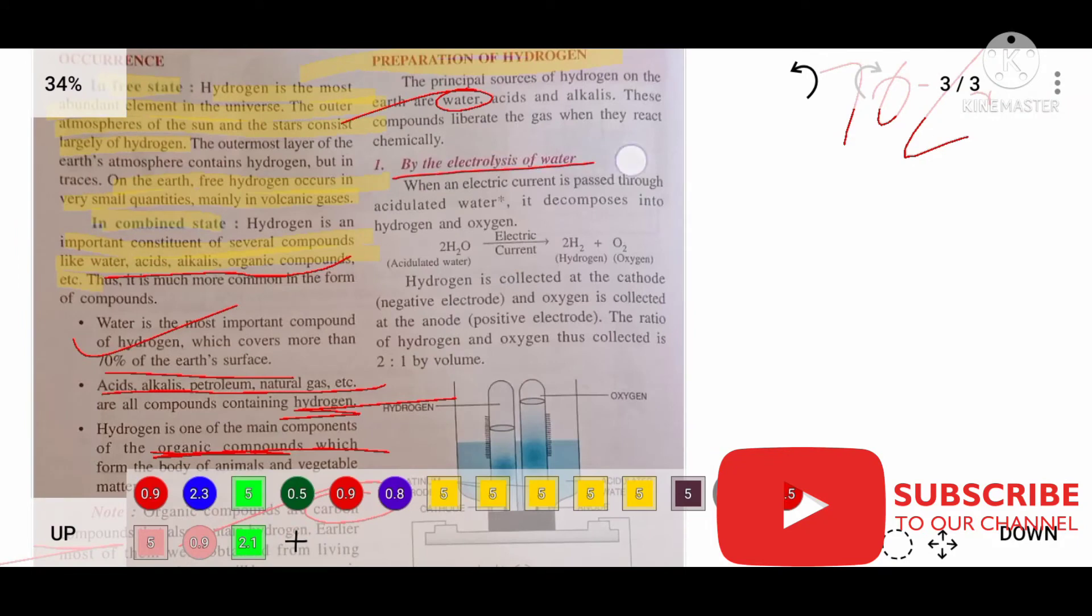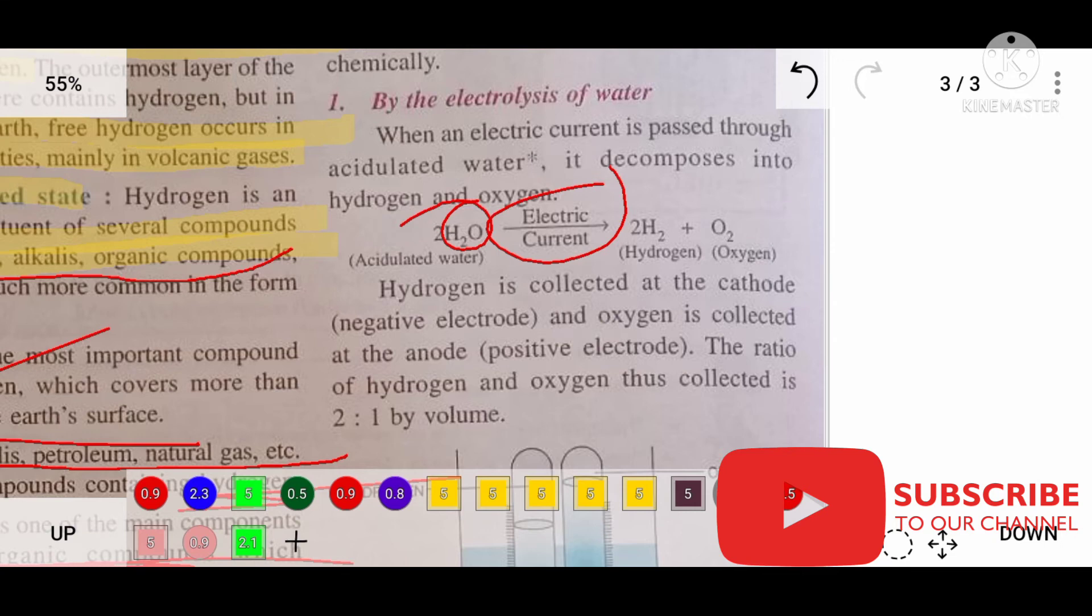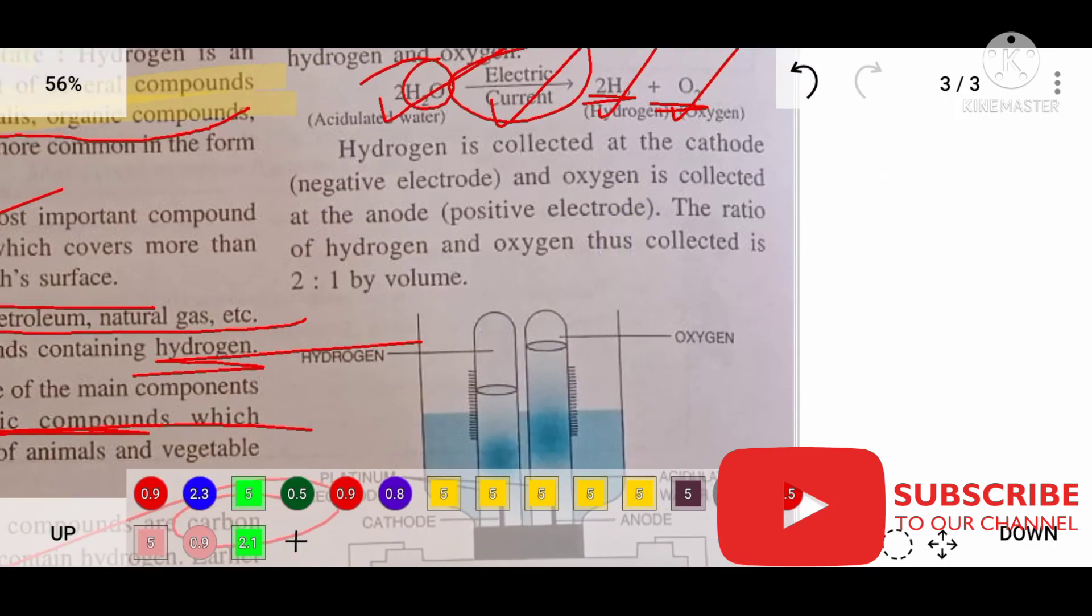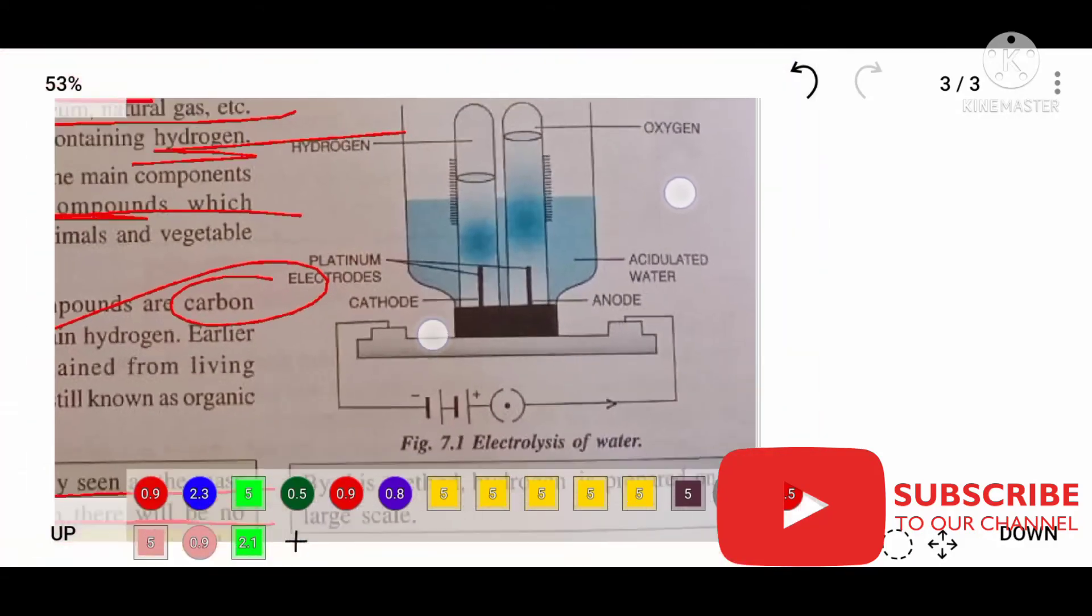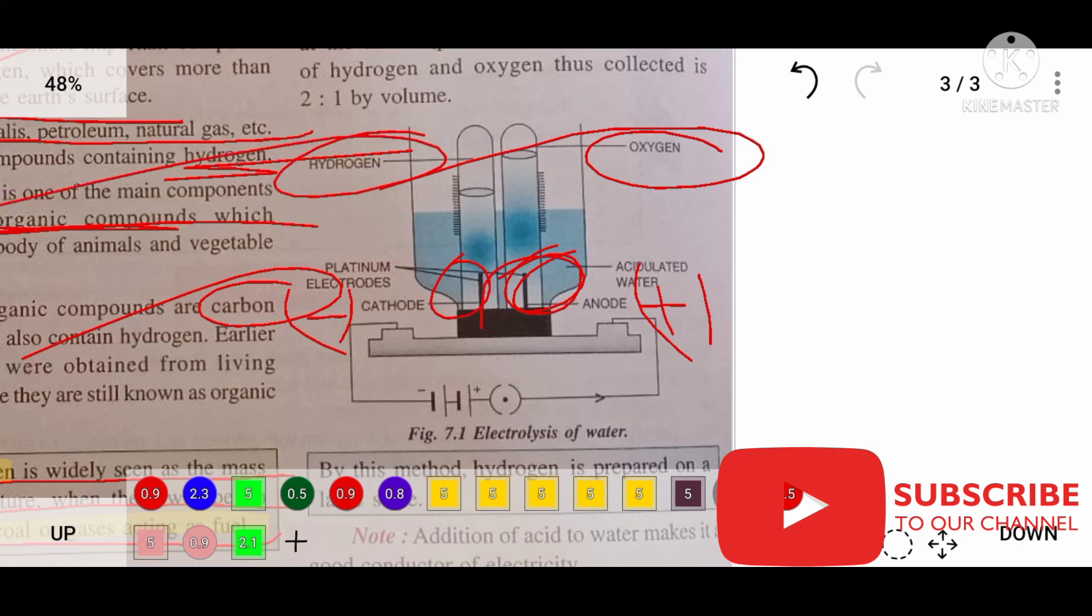By electrolysis of water - electrolysis means passing electricity through water. When you pass electric current, a chemical reaction happens. H2O splits into H2 and O2. This is done in the laboratory. Hydrogen is collected at the cathode and oxygen is collected at the anode. Cathode means negative terminal, anode means positive terminal. When you give electricity, oxygen will be at the anode side and hydrogen at the cathode (negative side).